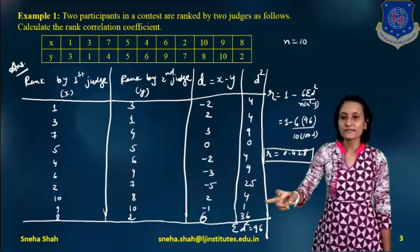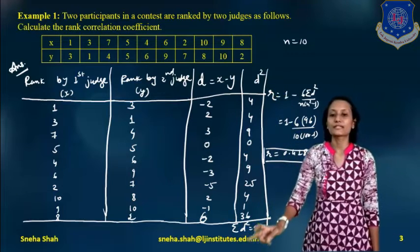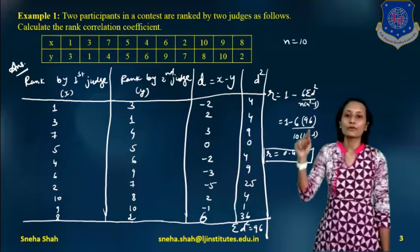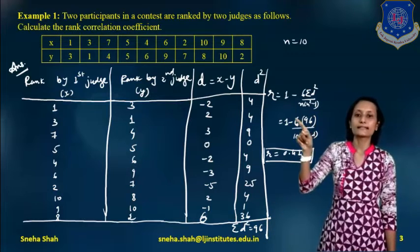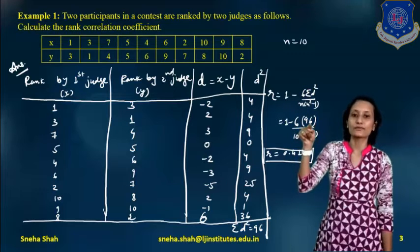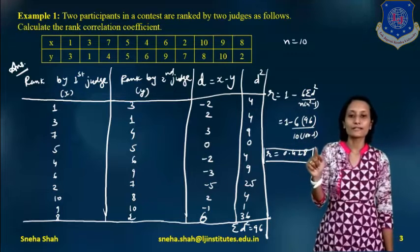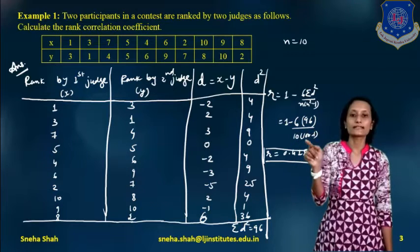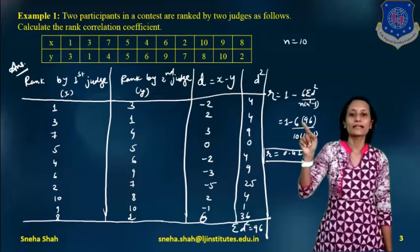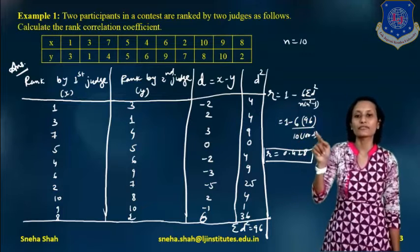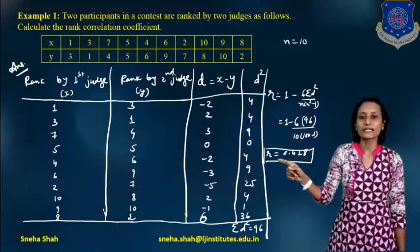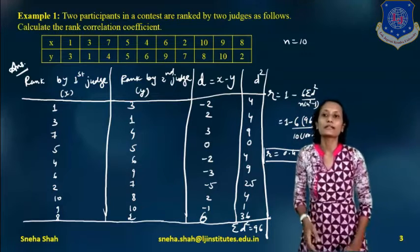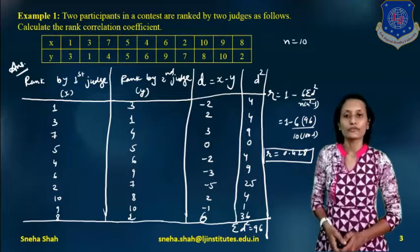Adding all d-squared values gives summation d-squared equals 96. Now substituting: 6 into 96 divided by 10 into 100 minus 1, which is 10 into 99 equals 990. So R equals 1 minus 6 times 96 divided by 990. After simplification, the answer is R equals 0.428. This is how we solve the example for rank correlation coefficient.